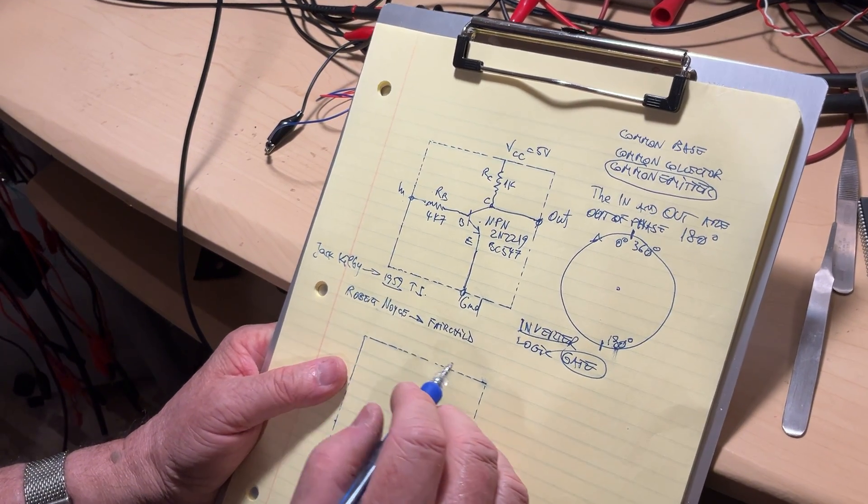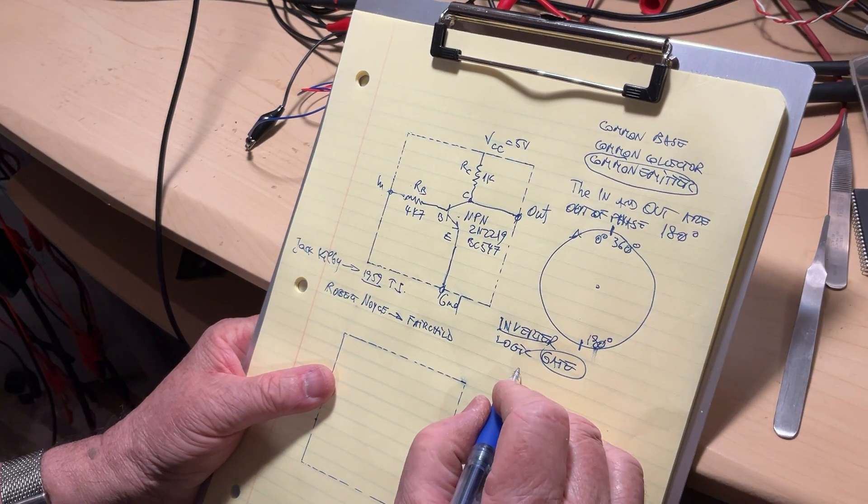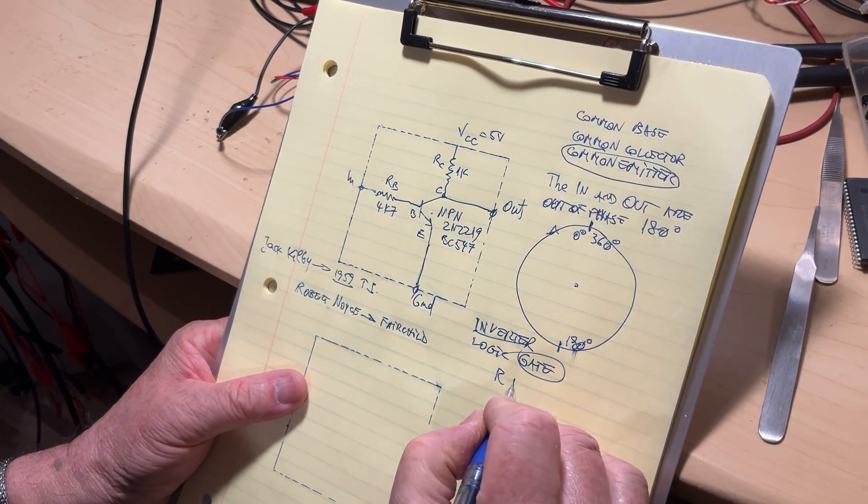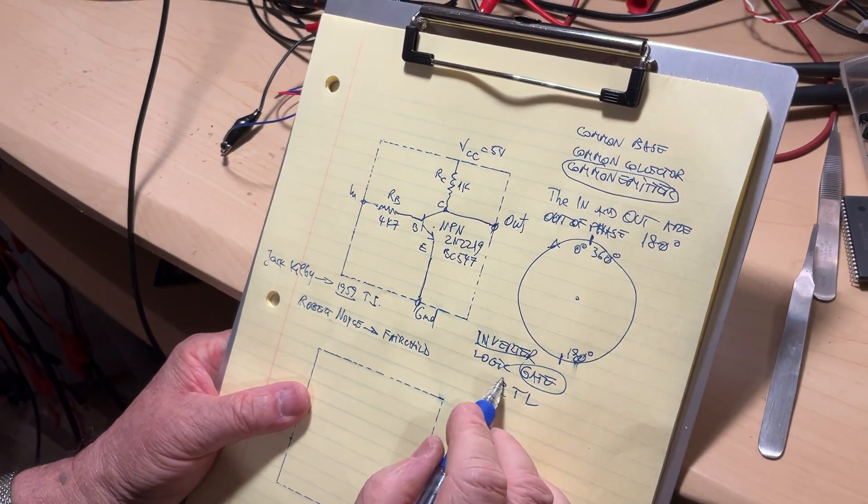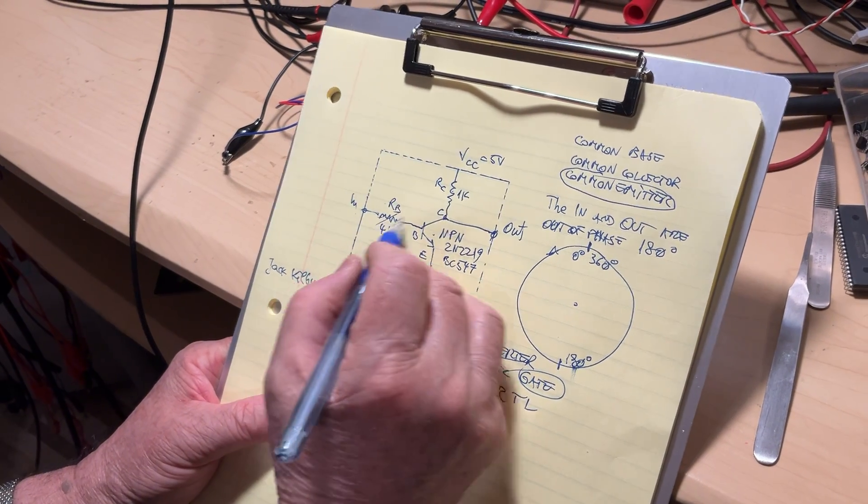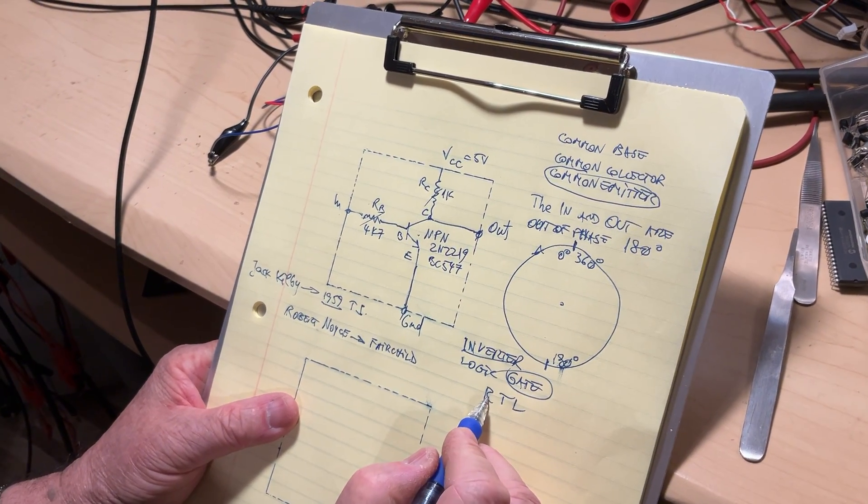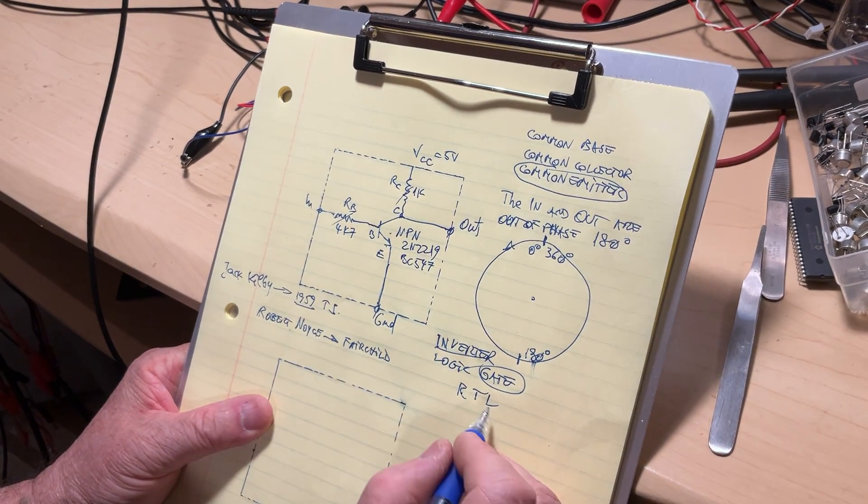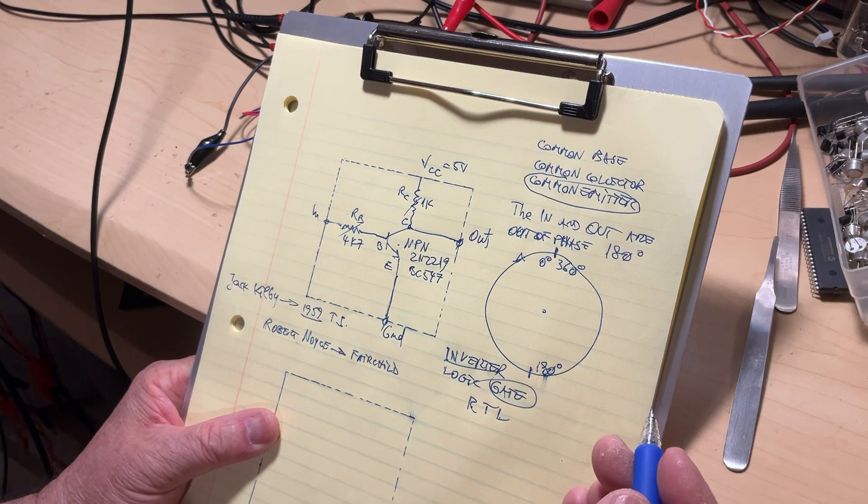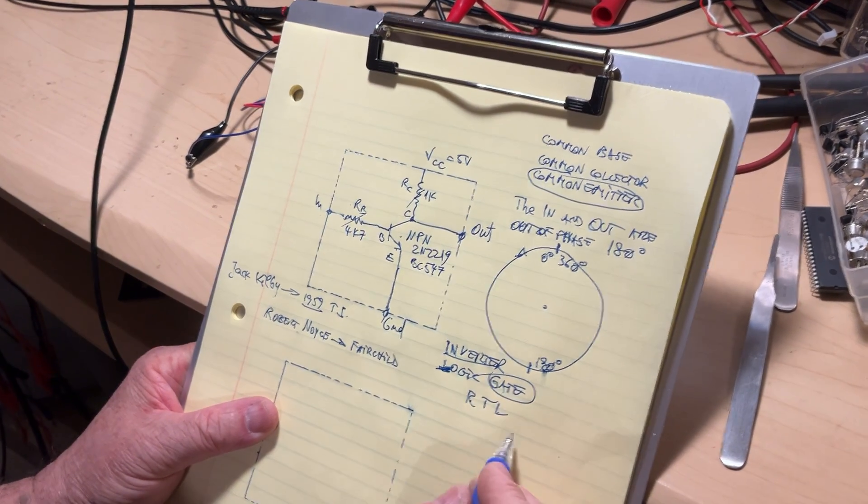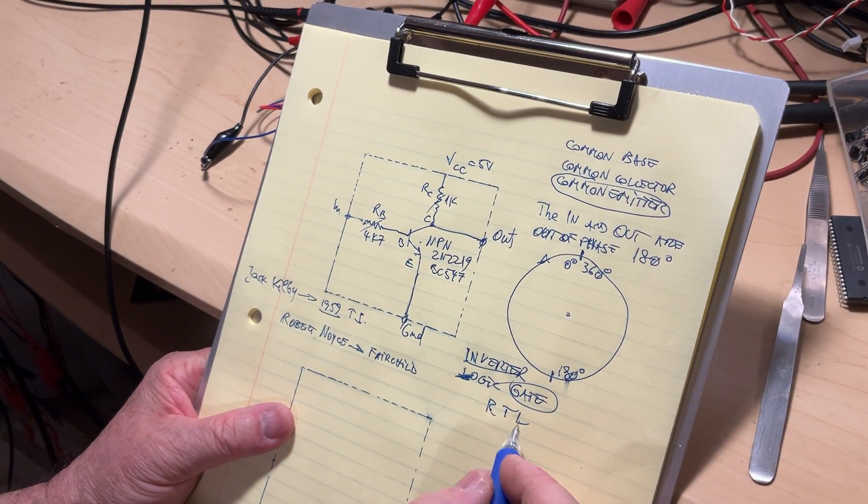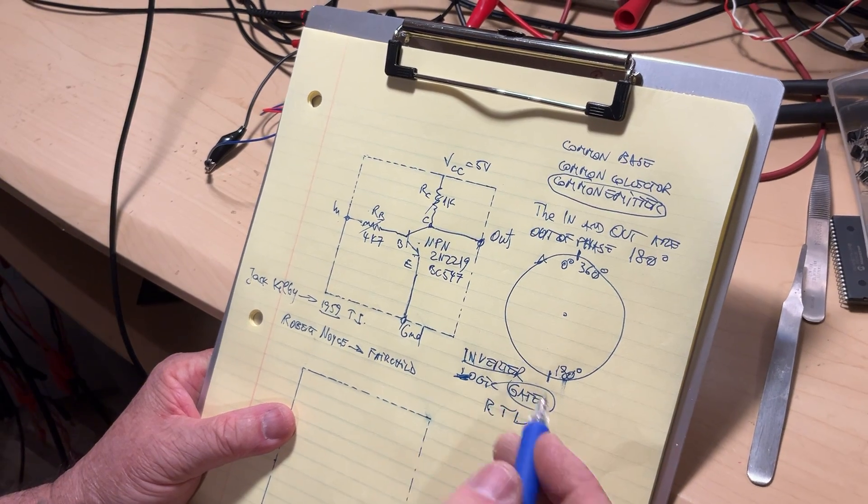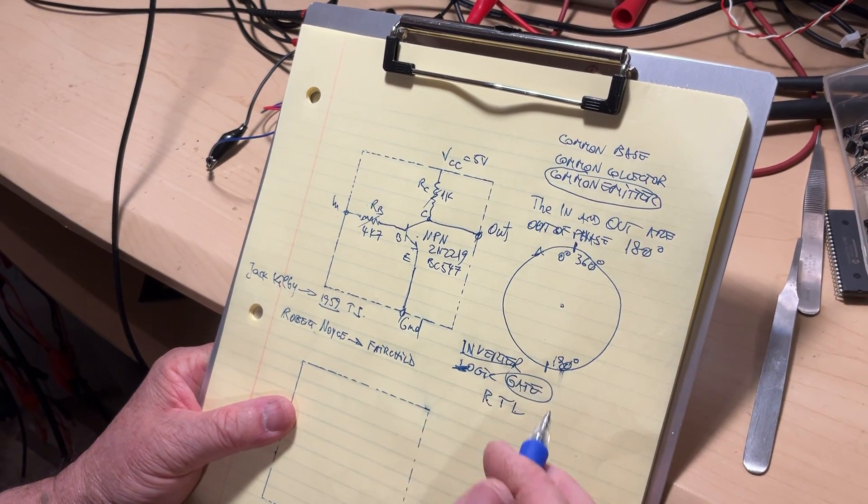A couple of months later, another brilliant engineer, Robert Noyce. He was the leader of the Traitorous Eight and was one of the bosses of the company Fairchild Semiconductors. This one had another thinking about the integrated circuit.